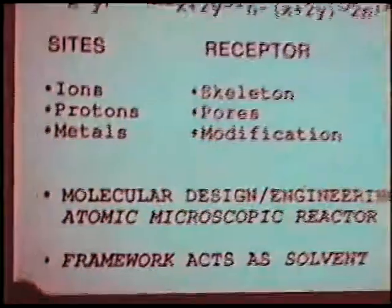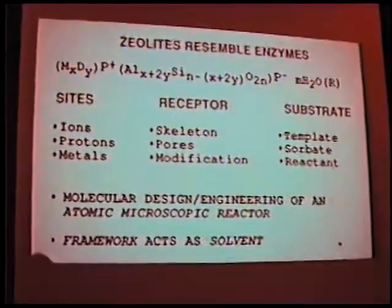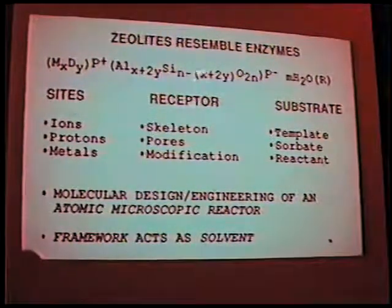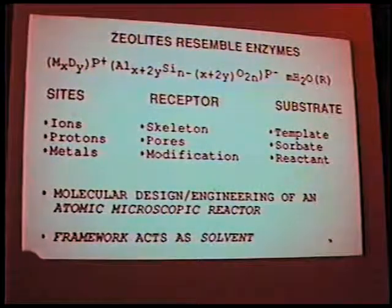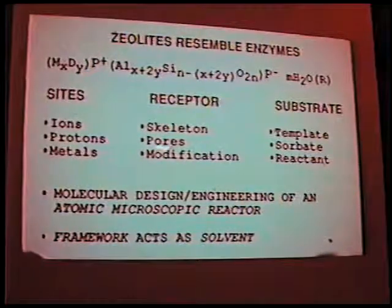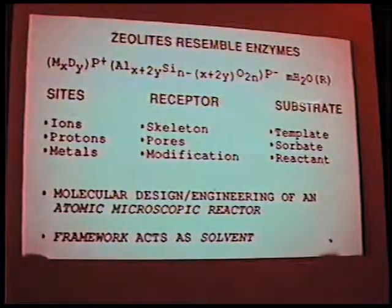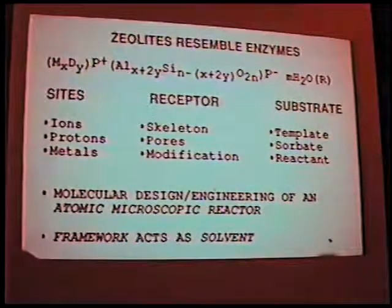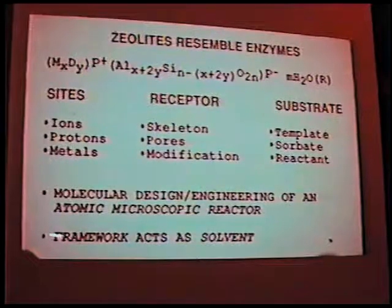When we deal with zeolites and refer to non-binding interactions, I believe we can draw a parallelism between zeolites and enzymes. We have a receptor site which is the zeolite framework — typically an aluminosilicate, unless we deal with aluminophosphate or silicoaluminophosphate materials — and this receptor site can be modified. What I am really interested in is the size of the pores. We have a substrate which is the template in the synthesized material, or a sorbate in adsorption, or the reactant in a chemical reaction. Sites can be cations, protons in the acidic form of zeolite, or metal particles.